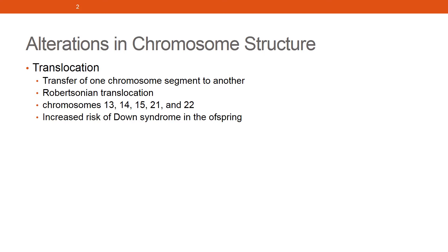When Robertsonian translocation happens, the short arms are lost completely during subsequent cell divisions. As a result, there is loss of no important genetic material, and the individual will have only 45 chromosomes in each cell but will present as a normal individual, without any disorder, because no essential material is lost.